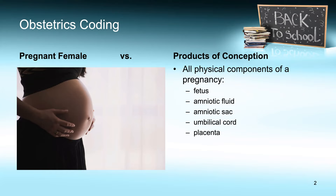An important point with obstetrics coding: you must pay attention to whether the procedure was performed on the pregnant female or on the products of conception. Procedures performed on the products of conception are classified to the obstetrics section. However, procedures performed on the pregnant female on body parts other than the products of conception are coded to the appropriate root operation in the medical and surgical section or any other applicable section. Products of conception is the term used for all physical components of a pregnancy, including the fetus, amniotic fluid, amniotic sac, umbilical cord, and placenta.